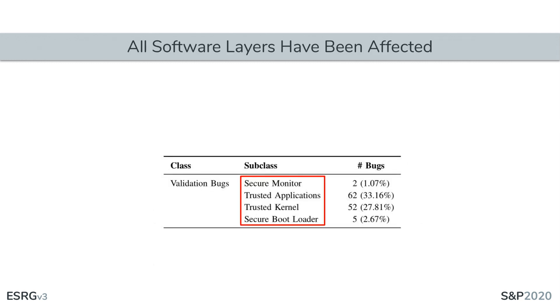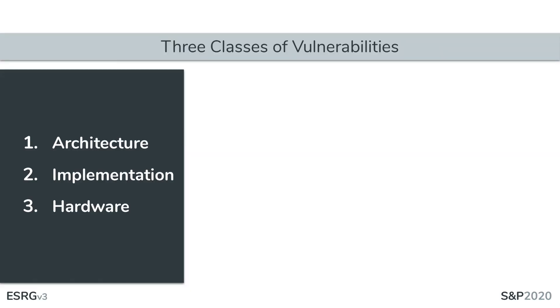Furthermore, all secure software layers have shown themselves vulnerable. These facts raise questions on the security guarantees that these systems actually provide. In the process of analyzing security vulnerabilities, we classified issues into three large categories: TE architecture, implementation, and hardware. I'm now going to talk about these issues, starting with the architectural problems.